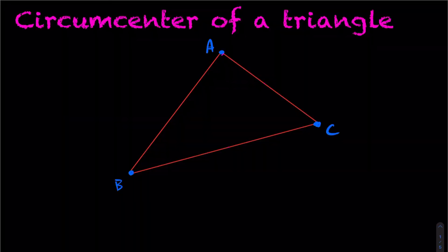We're going to be taking a look at calculating the circumcenter of a triangle. The definition of circumcenter is the intersection of all three of your perpendicular bisectors. If you don't recall what a perpendicular bisector is, I'll link a video in the top right-hand corner — please watch that first if needed. A perpendicular bisector is measured by the line segment, so line segment AB has its own perpendicular bisector, as does AC and BC. Intersecting these three gives you the circumcenter.